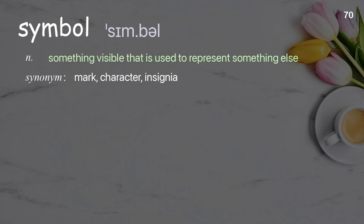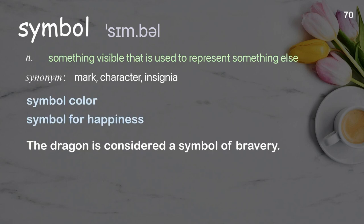Symbol: something visible that is used to represent something else. Examples: symbol for happiness. The dragon is considered a symbol of bravery.